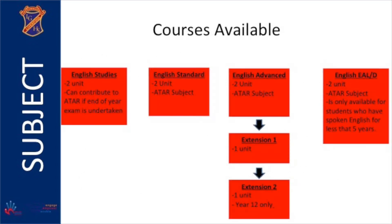There are four English courses available to choose from. The first is English Studies, a two-unit course that can contribute to ATAR if the optional end-of-year examination is undertaken. The second is English Standard, a two-unit course that will contribute towards ATAR. The third is English Advanced, also a two-unit subject contributing to ATAR. The fourth is English EALD, also a two-unit subject contributing towards ATAR.